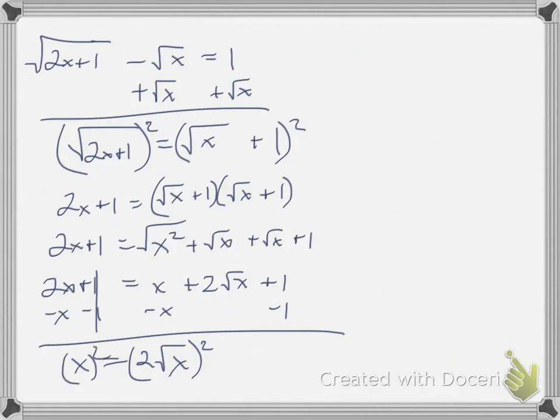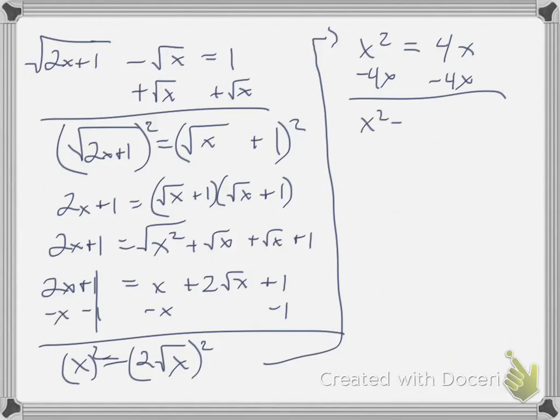When I square that right side, the left side just becomes x squared. The right side, you have to square the 2, so that becomes 4. Square the square root of x, that becomes x. And I get 4x. Subtract 4x from both sides because it's a quadratic. I want everything on one side equal to 0. Okay, and factor. I'm going to factor out an x. I'm left with x minus 4. So I have x is equal to 0 and positive 4.